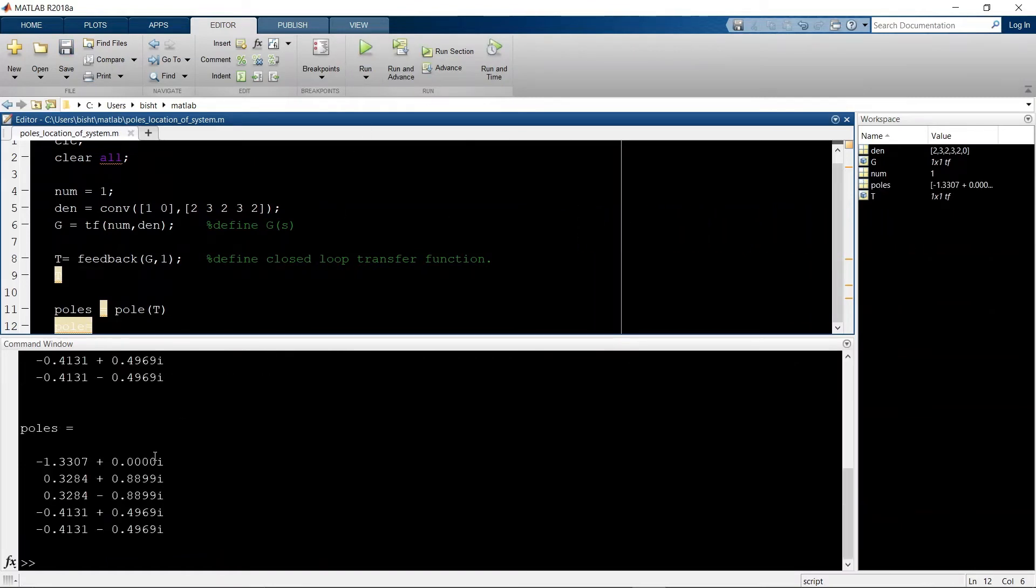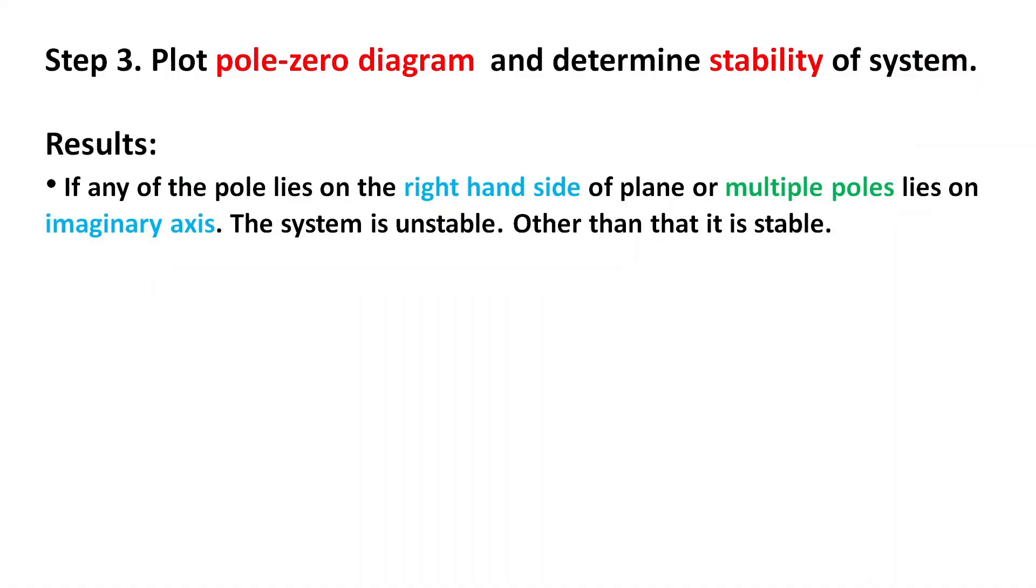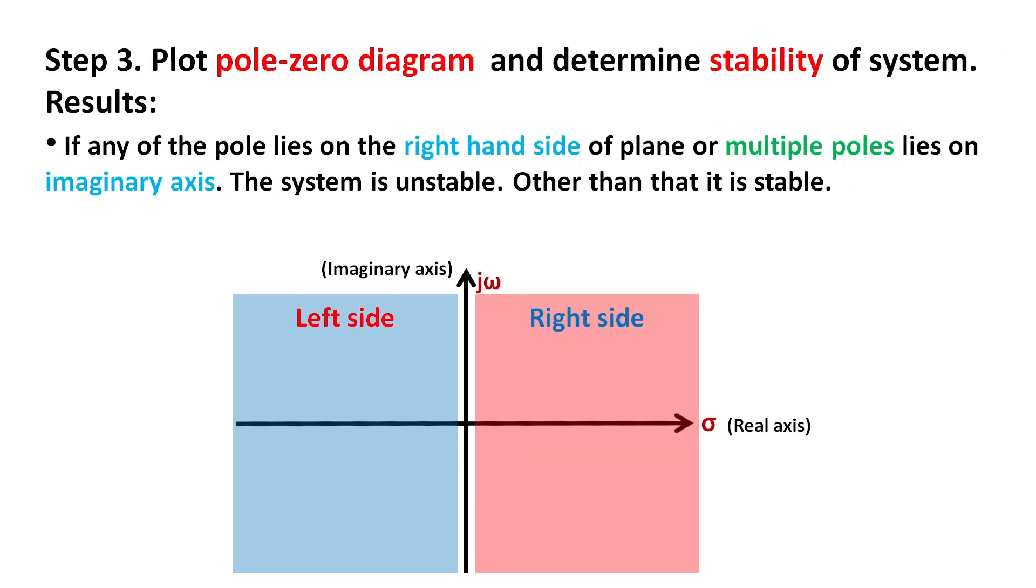Step three: now everything is ready. We have our poles ready; we just need to plot them. By the help of pole-zero plot, we can easily comment on the stability. If any of the poles lie on the right-hand side of the plane or multiple poles lie on the imaginary axis, then the system is unstable. Other than that, it is stable.